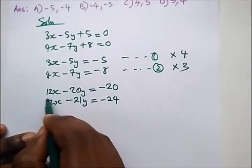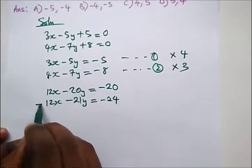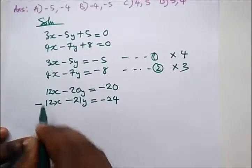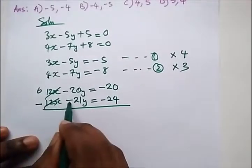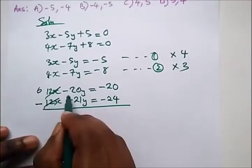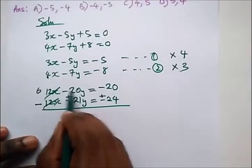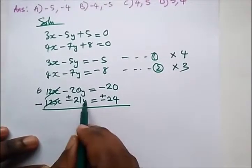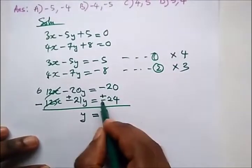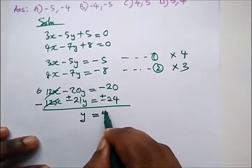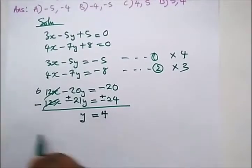Since both equations now have the same coefficient for x, we subtract to cancel it out. Subtracting changes all the signs in the second equation, so minus 20y plus 21y gives us y, and minus 20 plus 24 gives us 4. Therefore y equals 4.